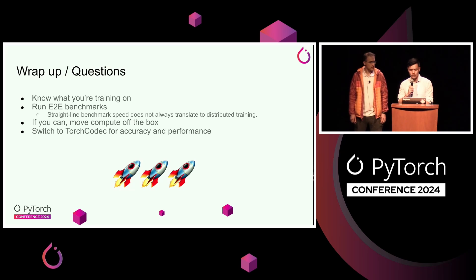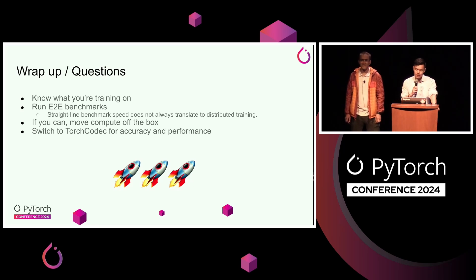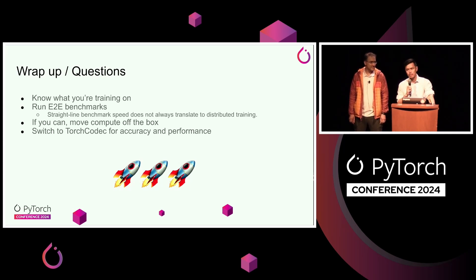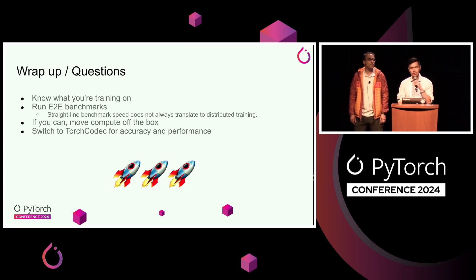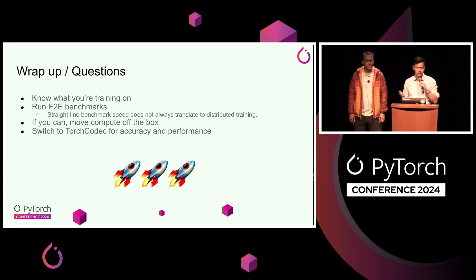A few key takeaways: First, make sure your decoder is actually seeking accurately — you might think you're sampling four different frames but they're all identical. Second, run end-to-end benchmarks; straight-line decoding benchmarks don't always translate into online distributed training, and you can see some surprising things happen. Third, make sure you're actually bottlenecked before you start optimizing, because in generative work the forward and backward pass can take so long it eats up any data time. If you're not bottlenecked, don't optimize too early.